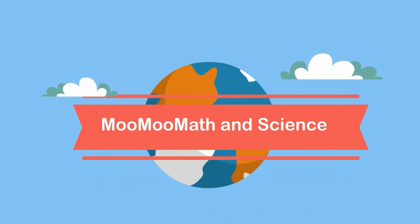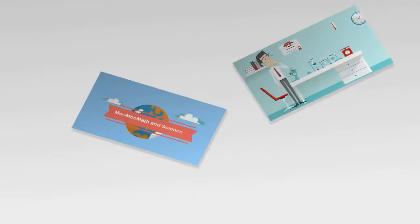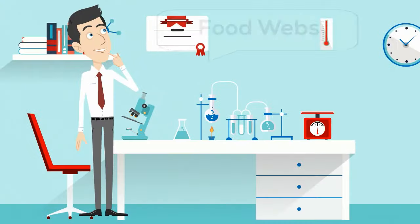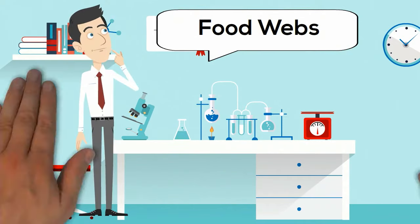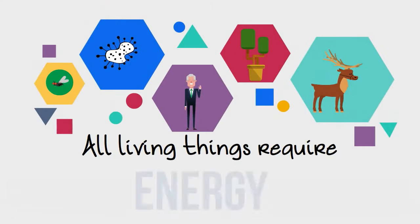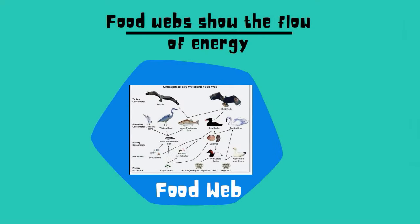Welcome to Moo Moo Math and Science. In this video, I'd like to talk about food webs. All living things require energy in order to stay alive. One model for showing the flow of energy in an ecosystem is a food web.